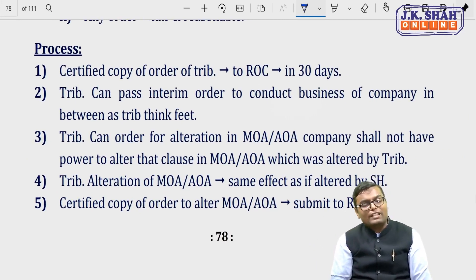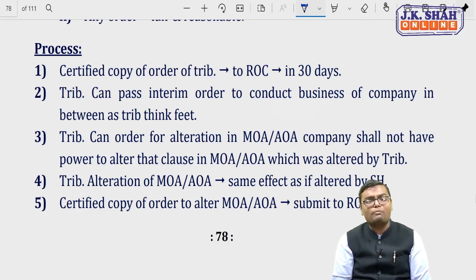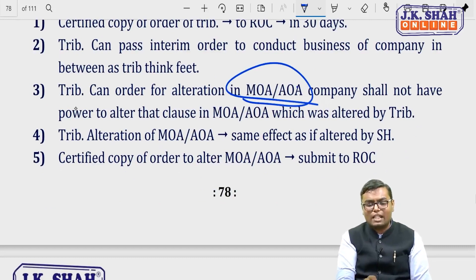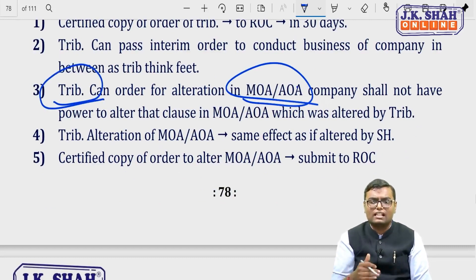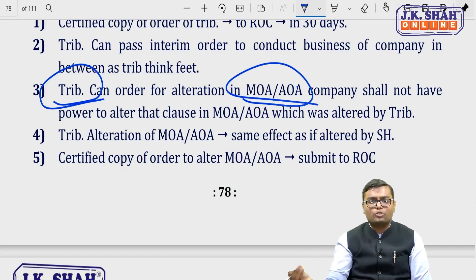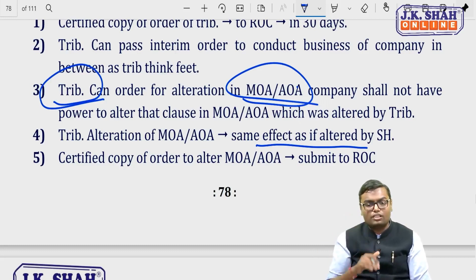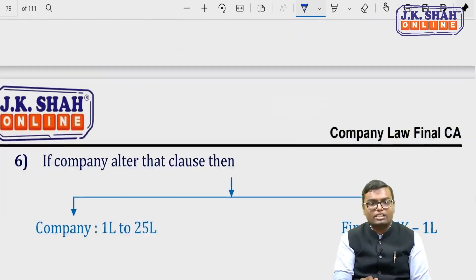If tribunal alters provisions of the MOA or AOA — including clauses giving powers to directors — it does so directly, even without a shareholder special resolution, and it is deemed to have been done by shareholders themselves. The company cannot reverse such alterations without tribunal approval. A certified copy of the new/amended MOA and AOA must be sent to ROC. If the company tries to alter what the tribunal has amended, a penalty of Rs. 1 lakh to Rs. 25 lakh is imposed on the company, and Rs. 25,000 to Rs. 1 lakh on officers.